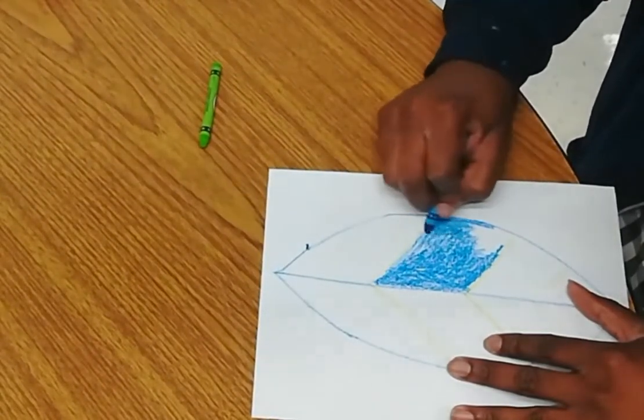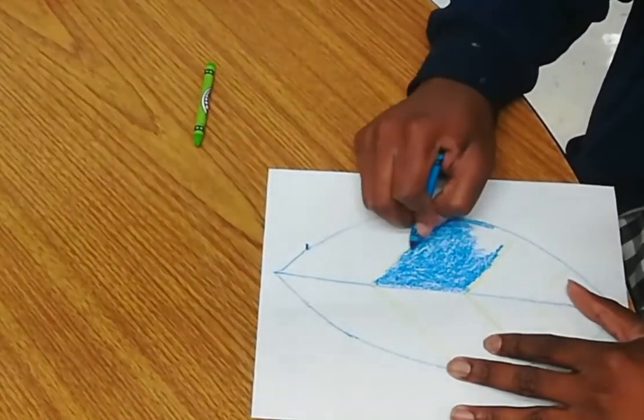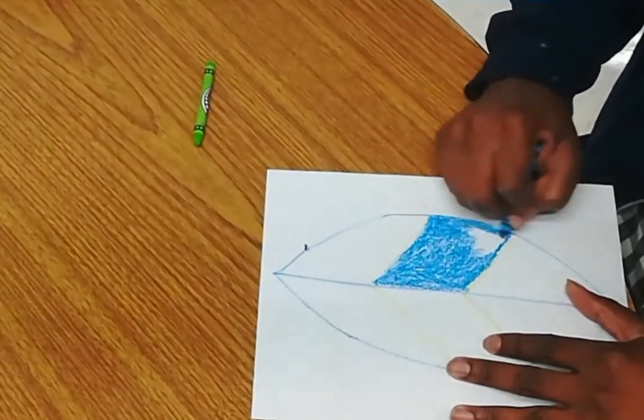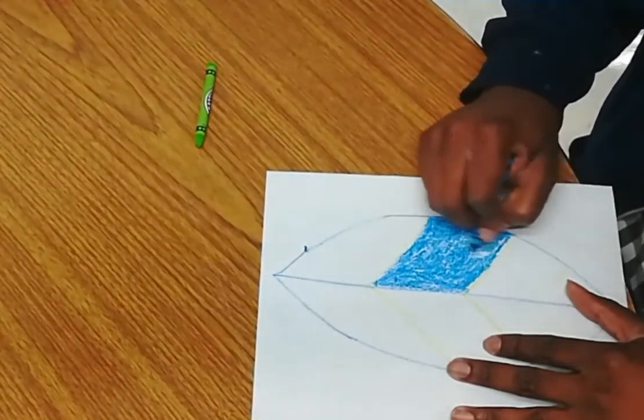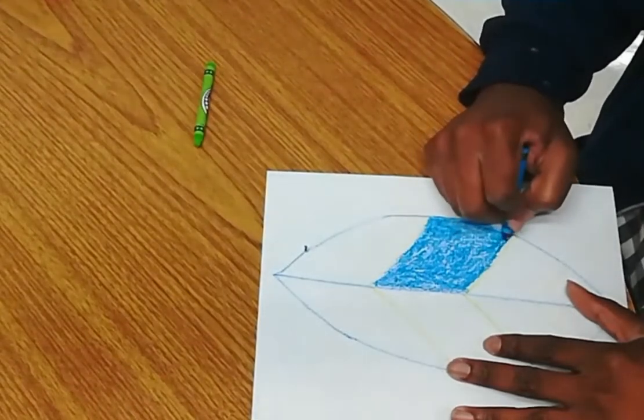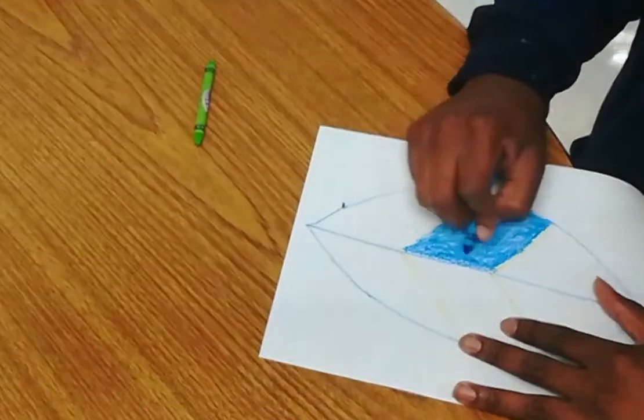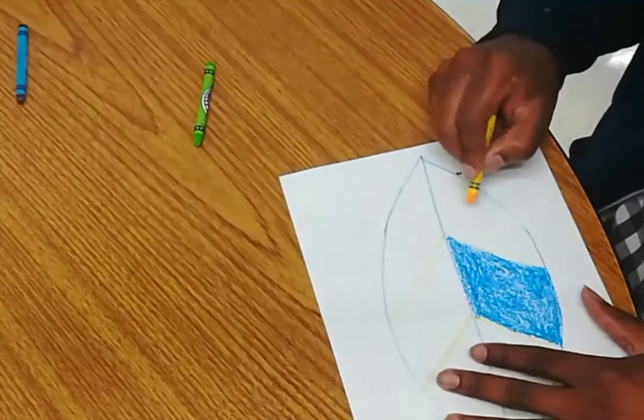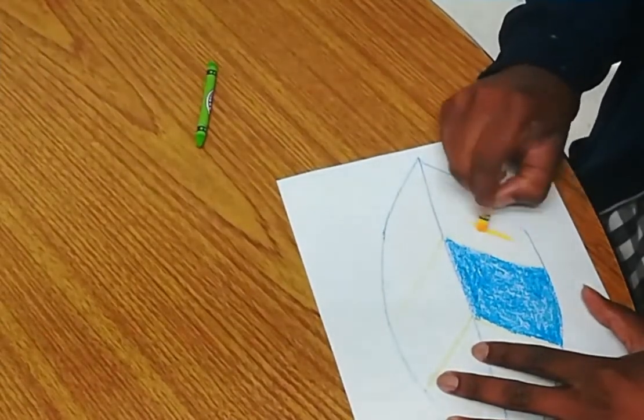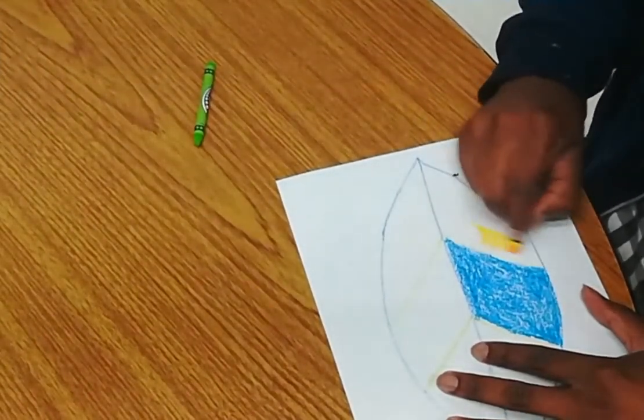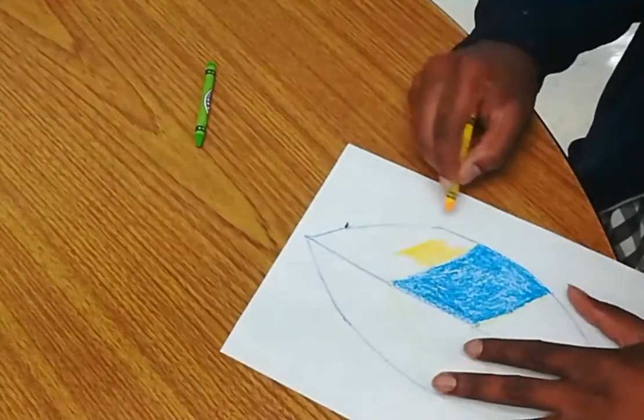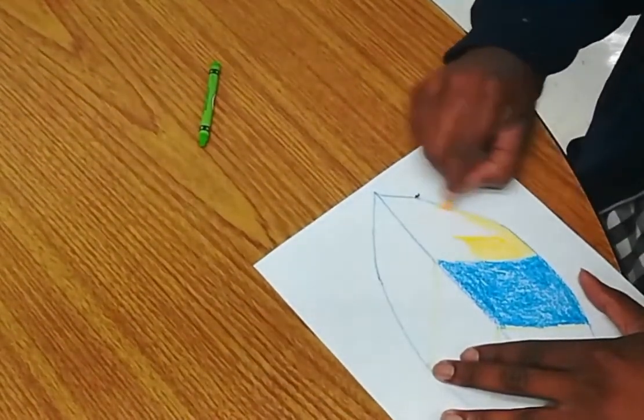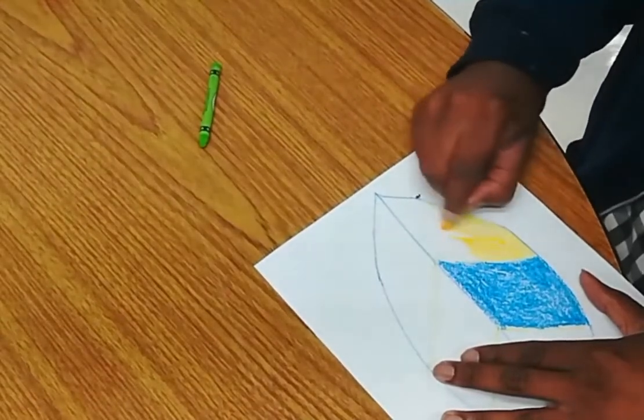Notice Mr. Jenkins is trying to fill all the white space with as much color as possible. Notice Mr. Jenkins has a layer.